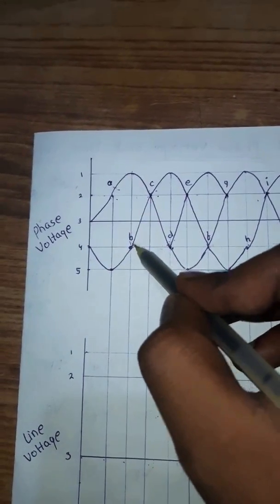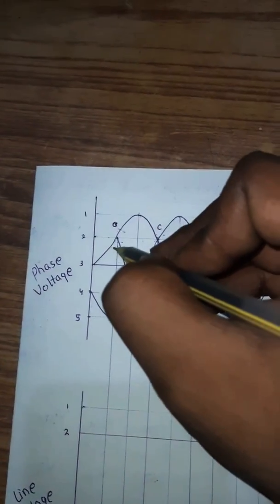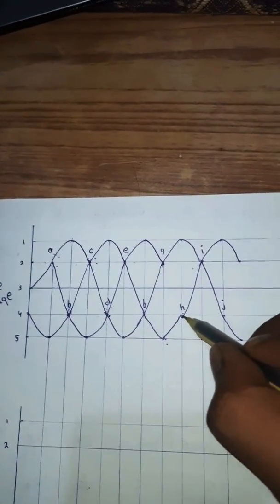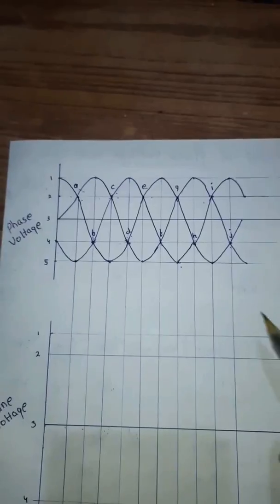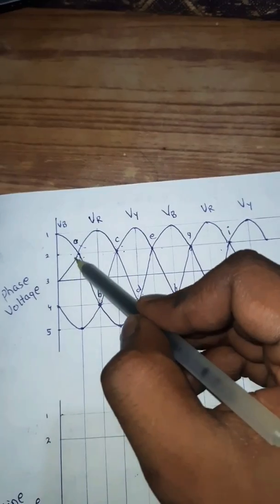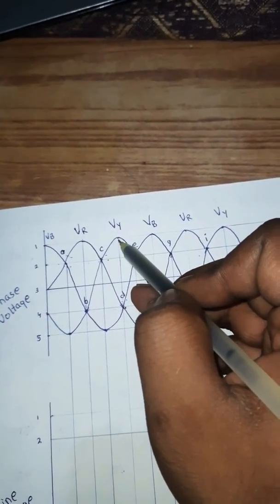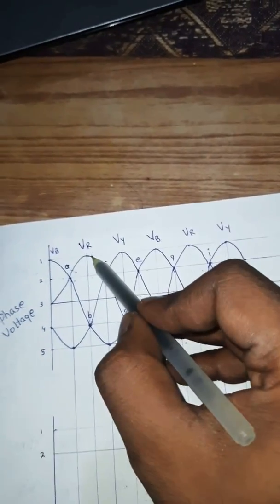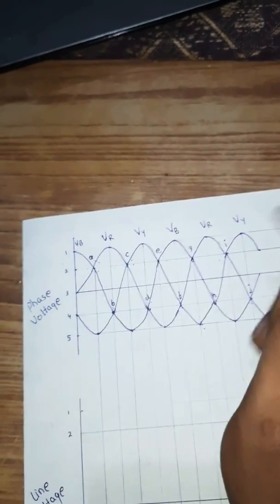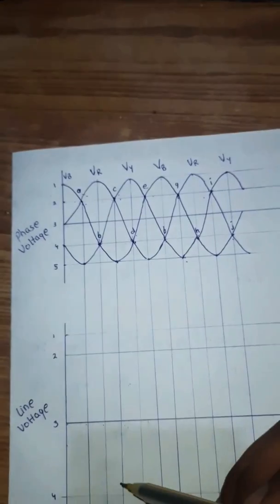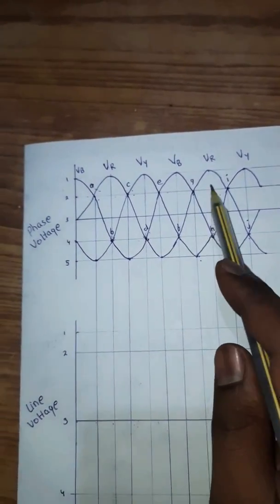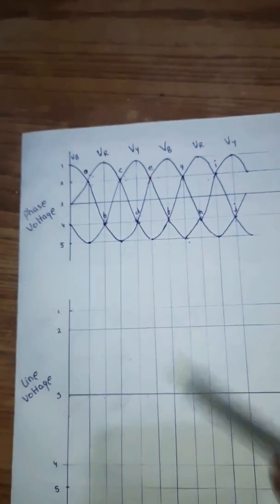Carefully connect point d to this point and this point to b, and from b to a. Then from this point to the origin of the first line. Similarly, from g to h, h to the next point, that point to j, and you are done with the waveforms. Starting from the origin, the first waveform is Vrn, the second is Vyn, the third is Vbn. As n is common we are not mentioning it — Vr, Vy, Vb — these are the phase voltage waveforms. You cannot draw line voltage directly; first draw phase voltage waveforms, then from those, line voltage waveforms are derived.